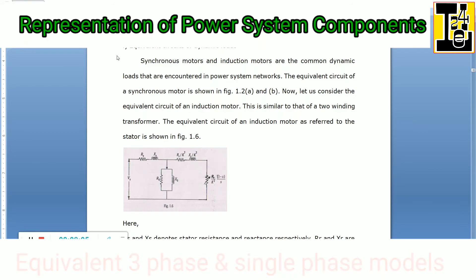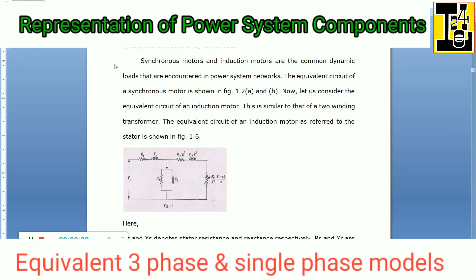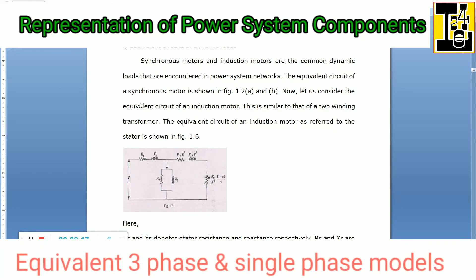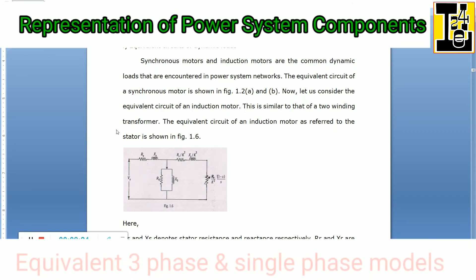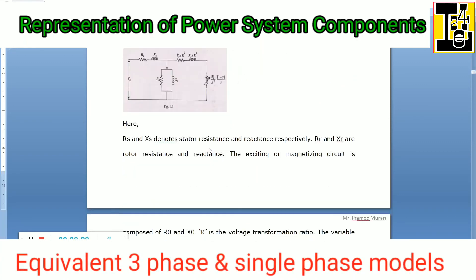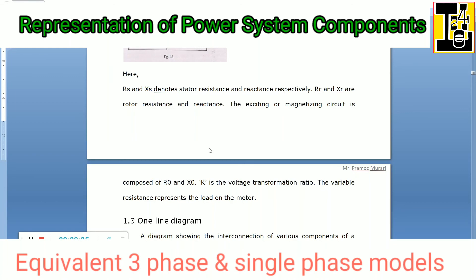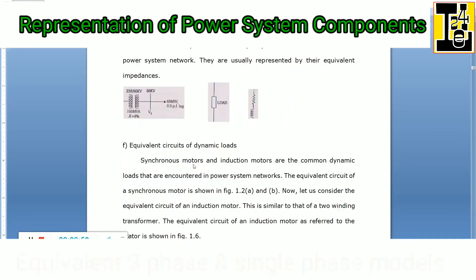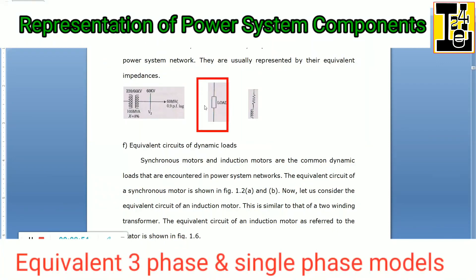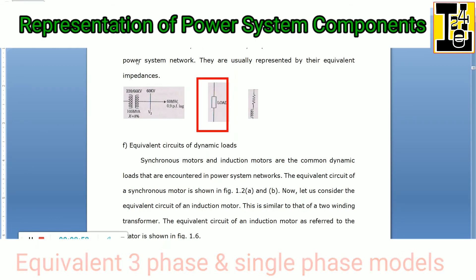Synchronous motors and induction motors are common dynamic loads encountered in power system networks. The equivalent circuit of an induction motor is similar to that of a two-winding transformer. The equivalent circuit referred to the stator is shown here. Rs and Xs denote the stator resistance and reactance respectively; Rr and Xr are the rotor resistance and reactance respectively. The exciting or magnetizing circuit is composed of R0 and X0. k is the voltage transformation ratio, and the variable resistance represents the load on the motor.